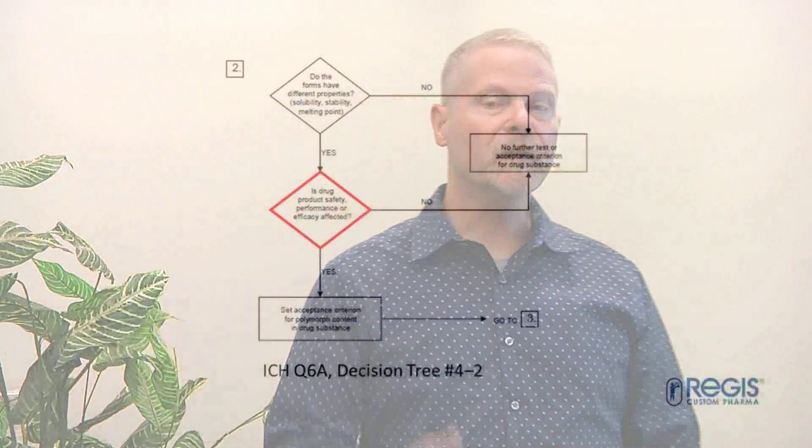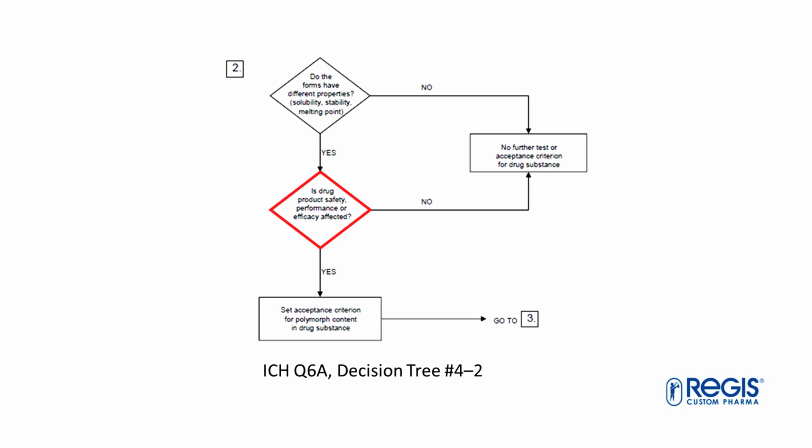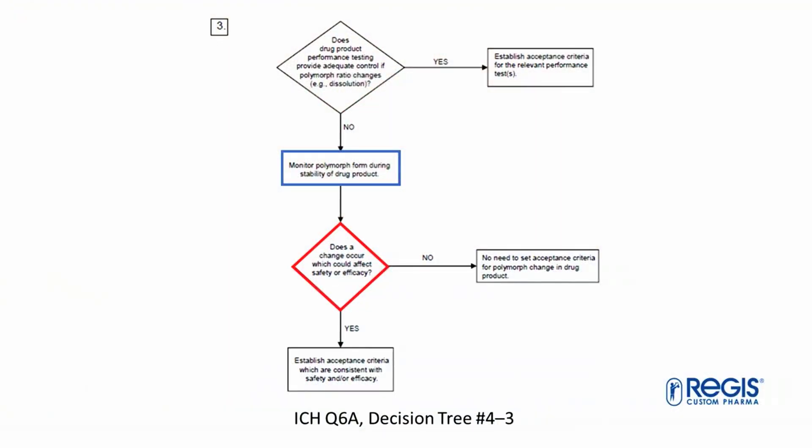Going back to Q6A, Decision Tree 4-1 clearly states that if there are different polymorphic forms, we need to characterize those — and most likely those different polymorphs have different physical and chemical properties. Decision Tree 4-2 asks if different polymorphs affect the drug product performance or safety, and if so, you need to set criteria for your drug substances. Decision Tree 4-3 asks if the drug product performance testing provides adequate control if the polymorph ratio changes — such as dissolution — and if so, you need to set specifications for your drug product.